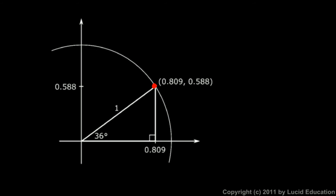So we started here on the unit circle and rotated around through 36 degrees of rotation. That gets us to this point, and this point has these x and y coordinates. Since on the unit circle this is an x value of 0 and this is an x value of 1, it makes sense that this x coordinate would be a little bit less than 1, and the same with the y coordinate. Now imagine drawing a line straight down so a right triangle is formed. The x-axis, this line, and the hypotenuse — or the radius — of the unit circle form a right triangle, and that triangle has a hypotenuse of 1.